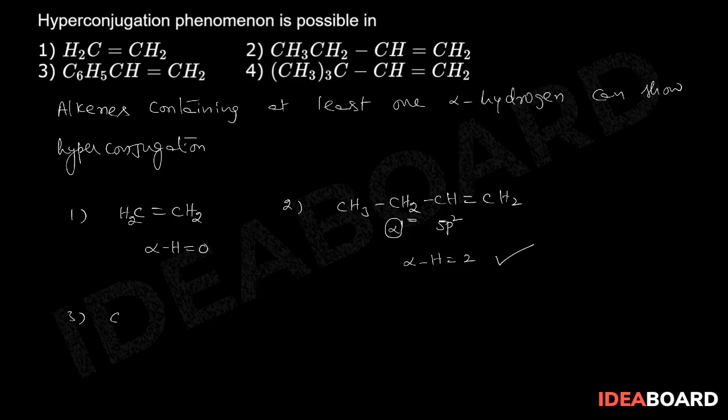In the third case, C6H5-CH double bond CH2. Here at the sp2 carbon, there is no alpha hydrogen. So the number of alpha hydrogens is equal to zero.